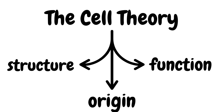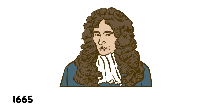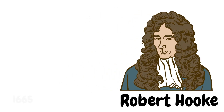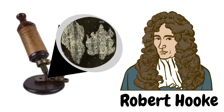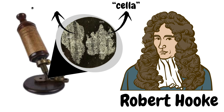The journey of the cell theory begins in 1665 with an English scientist named Robert Hooke. He used a compound microscope to observe a thin slice of cork and saw many tiny box-like compartments. These structures reminded him of the small rooms or cells where monks lived, and so he named them cells. However, due to the type of microscope available at the time, Hooke was only able to observe the non-living cell walls of the cork tissue.